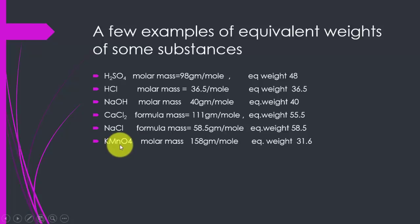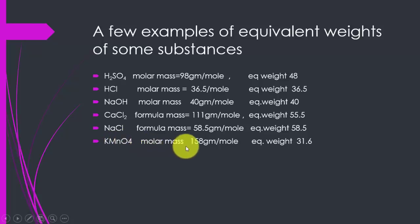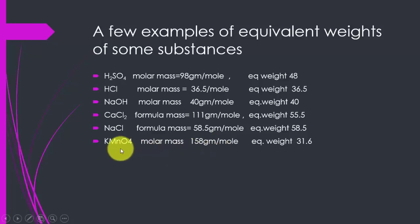For oxidizing agents, we look at the substance they convert into after reaction. In most cases, potassium permanganate converts into manganese dioxide, so we look at the oxidation state of manganese in manganese dioxide. The difference in oxidation state of potassium permanganate and manganese dioxide comes out to be +5, so we divide the molar mass by 5, giving an equivalent weight of 31.6.